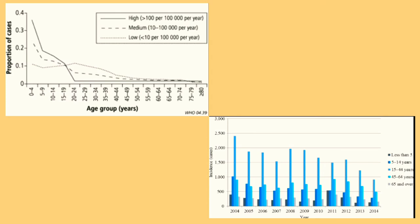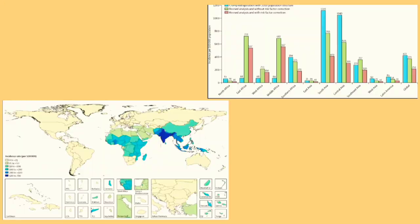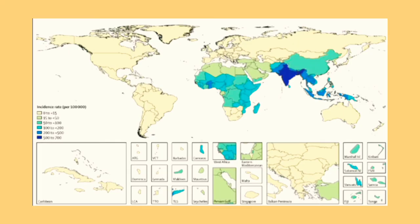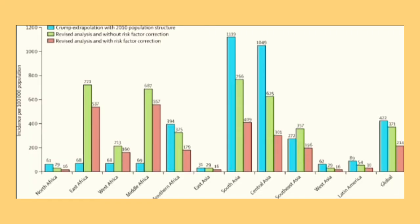This disease is most likely to be seen in children and young adults from 5 to 19 years old. South Central and Southeast Asia record the highest rates of typhoid cases. In 2000, 21.7 million people were reported to be ill, 90% of which occurred in Asia, while 1% of them died.